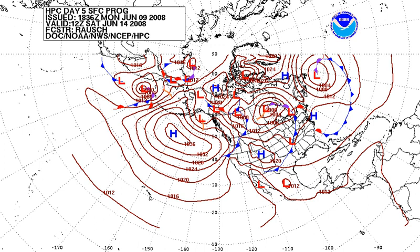Increasingly, private companies pay for weather forecasts tailored to their needs so that they can increase their profits or avoid large losses. For example, supermarket chains may change the stocks on their shelves in anticipation of different consumer spending habits in different weather conditions. Weather forecasts can be used to invest in the commodity market, such as futures in oranges, corn, soybeans, and oil.